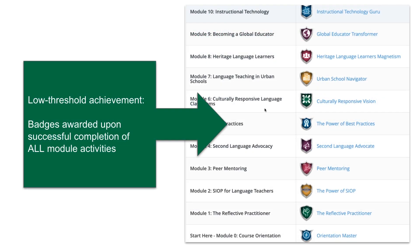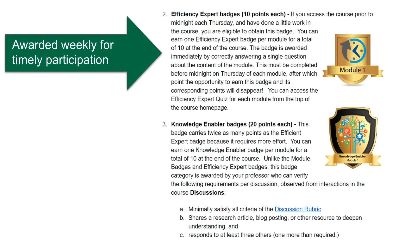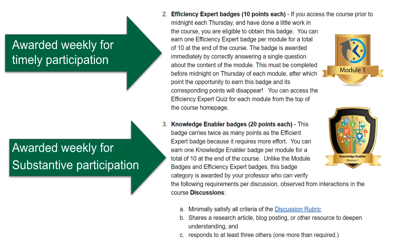That's a fairly low threshold — they get the badge if they have completed all of the activities in the module. The next two tiers of badging require some additional work. The first is an efficiency expert badge, awarded weekly for timely participation — specifically, logging in by Thursday of a week that begins on Monday and ends on Sunday, and completing a one-question quiz based on content they could only have learned by logging in early and doing a little bit of reading.